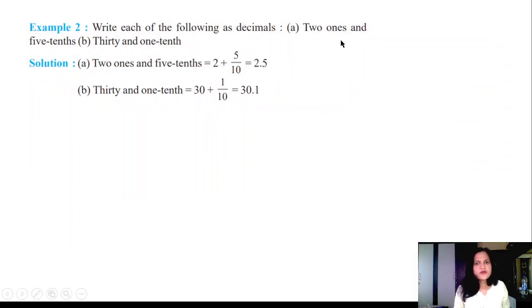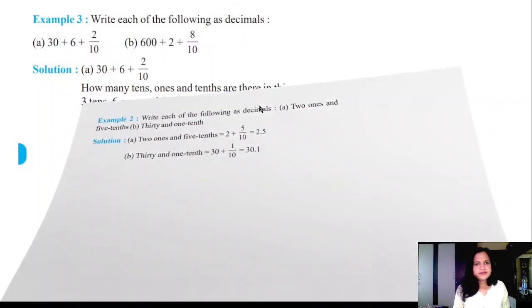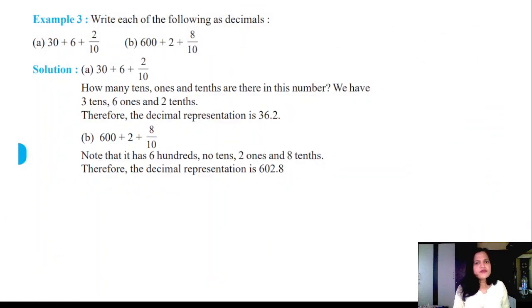Write each of the following as decimals. 2 ones and 5 tenths: 2 ones, 5 tenths is 5 by 10, so you will get 2.5. 30 and 1 tenth is 30.1. This is 30 plus 6, that's 36, plus 2 by 10 is 0.2, it is 36.2. This is 600 plus 2, 602, 0.8, it is 602.8.